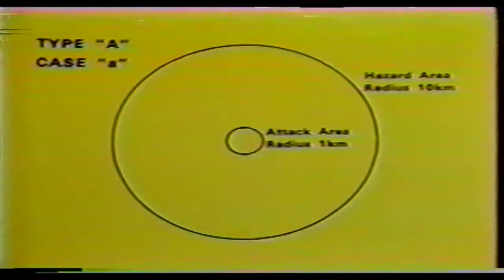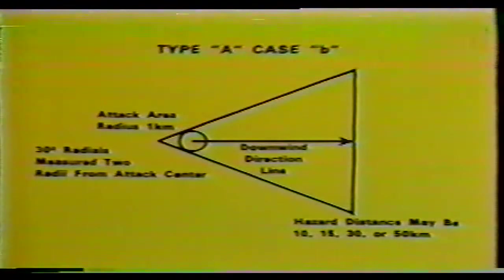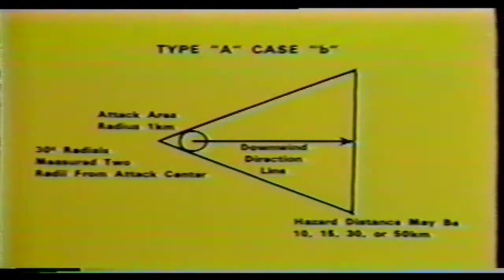If the type of contamination is unknown, we always assume Type A, air-contaminating attack, and the prediction is based upon wind speed, air stability, and means of delivery. When the wind speed is 10 kilometers or less, the hazard area is in the shape of a circle. When the wind speed is greater than 10 kilometers, the hazard area is in the shape of a fan. Once the type of contamination becomes known, the hazard prediction area will be changed if needed and a new NBC 3 sent out.